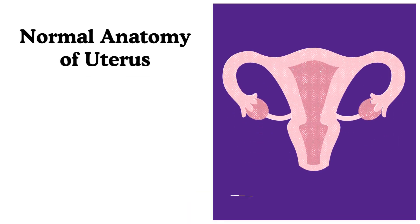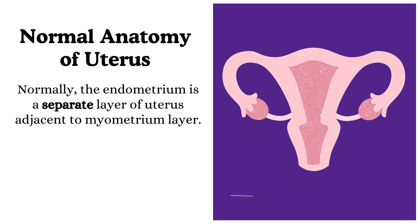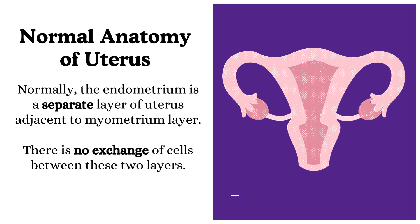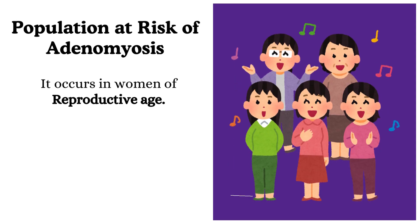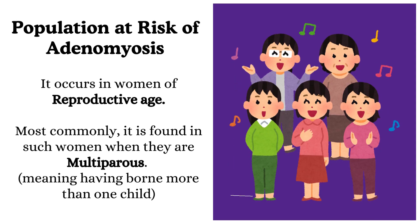What is the normal anatomy of the uterus? Normally, the endometrium is a separate layer of uterus adjacent to the myometrium layer. There is no exchange of cells between these two layers. Population at risk of adenomyosis: it occurs in women of reproductive age, most commonly found in multiparous women, meaning having born more than one child.